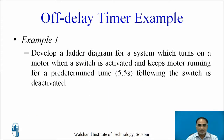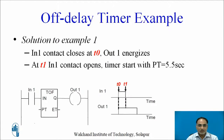Let us solve some examples with the help of the off delay timer. We will develop a ladder diagram for a system which turns on a motor when a switch is activated and keeps the motor running for a predefined time — let us say 5.5 seconds — following the switch being deactivated. A ladder rung is shown with an input switch, an output coil, and an off delay timer in between them, along with a waveform on the right hand side.